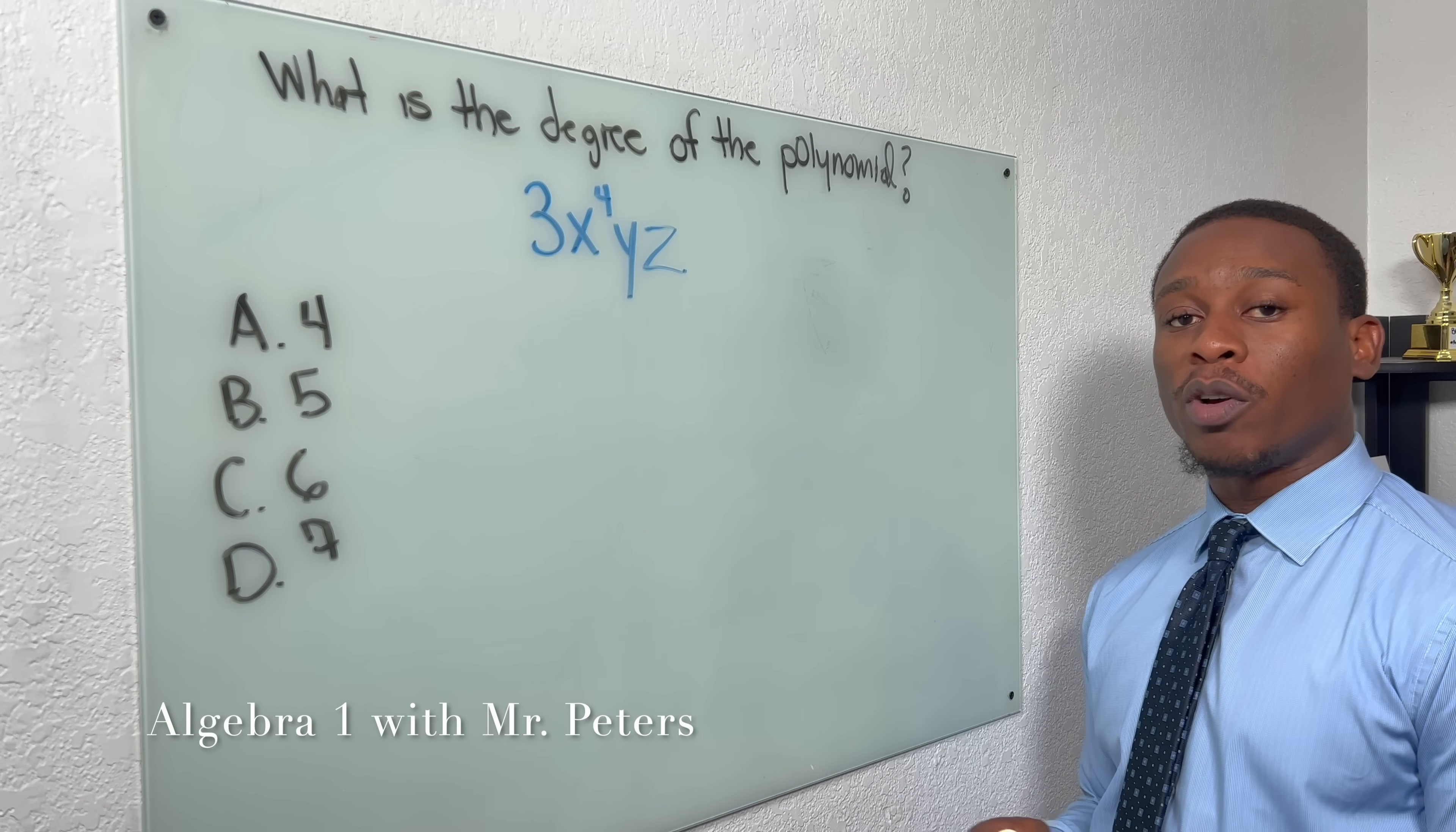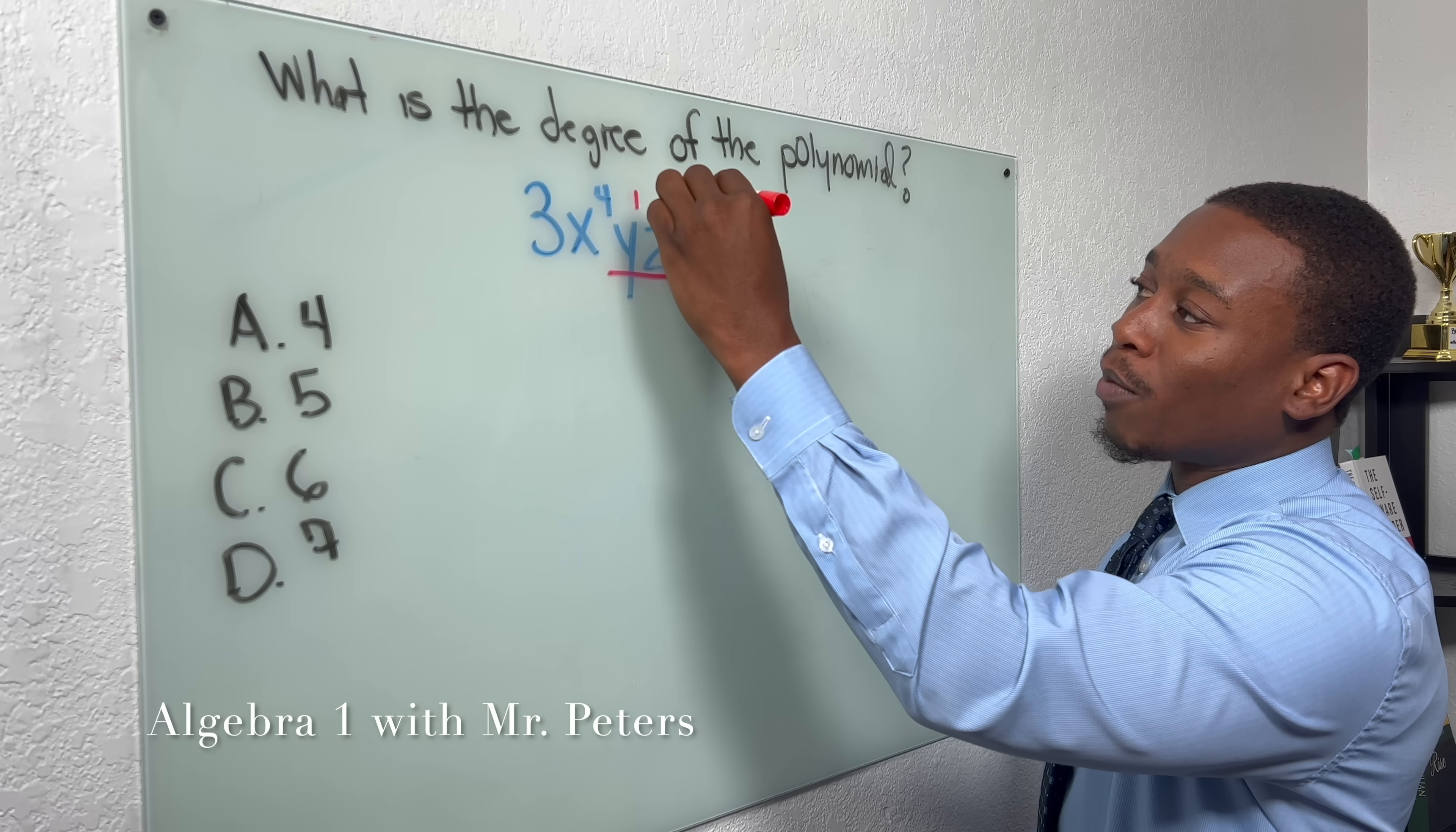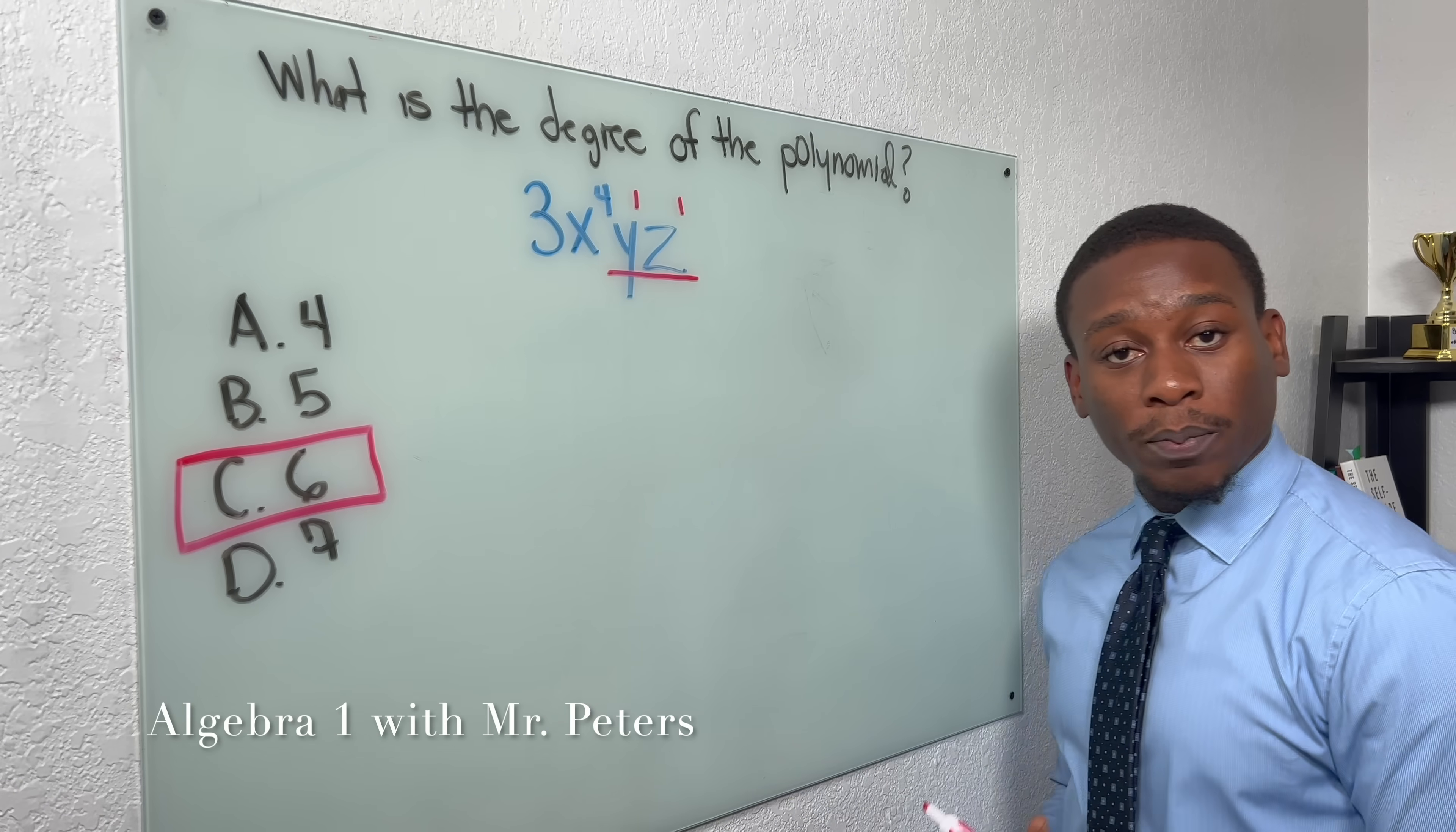So now we're on to our second polynomial problem, guys. And I really want to show you guys this trick. So when we have other variables, even though there is not an exponent, guys, understand that it has a power of 1. So if I'm asking you for the degree of this polynomial, which really is a monomial because it's one term, we will just add these exponents up. And our final answer for the degree would be 6.